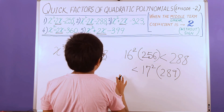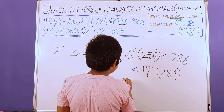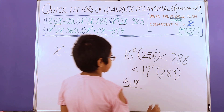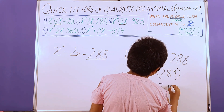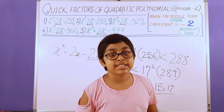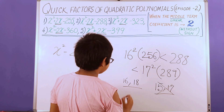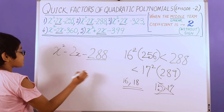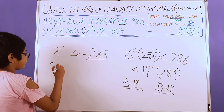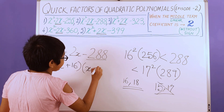As in the first case, we have a middle term coefficient of 2. We need to add 2 to the smaller number, giving us the pair 16 and 18. We subtract 2 from the bigger number, which gives us the pair 15 and 17. The product of two even numbers gives an even number, and 288 is even, so we take the even pair. We have a negative sign from 2x, which tells us the smaller number should have the positive sign and the bigger should have the negative sign. So the factorization is (x + 16)(x − 18).